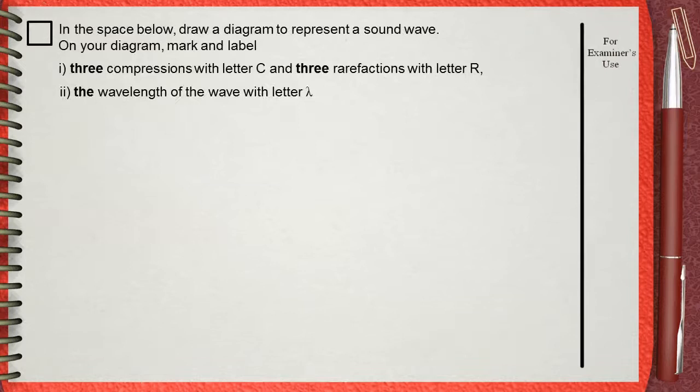In the space below, draw a diagram to represent a sound wave. On your diagram, mark and label: 1) three compressions with letter C and three rarefactions with letter R, and 2) the wavelength of the wave with letter lambda.